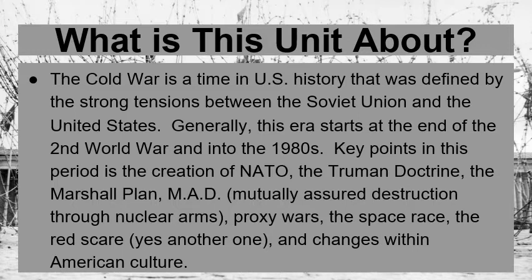Other key points include MAD — mutually assured destruction — proxy wars, the space race, the red scare, and changes within American culture. A proxy war is when two major powers have armed conflict but not directly — your friends fight their friends. This was significant in the context of MAD: when nuclear weapons could destroy all life on earth, the two superpowers avoided direct conflict, instead having smaller nations that weren't capable of nuking one another fight instead.